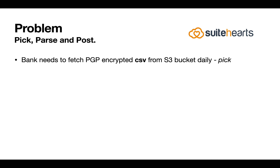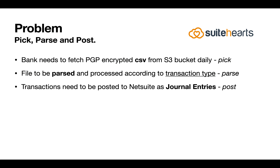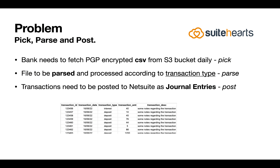So what's the problem? I have dubbed it pick, parse, and post. We have a test scenario where a bank needs to fetch a PGP encrypted CSV file from an S3 bucket daily — that's the pick part. We need to parse this file and process it depending on what transaction type it is — that's a field in the CSV file. Transactions then need to be posted to NetSuite as journal entries. In reality you could post it as any record type that you want.